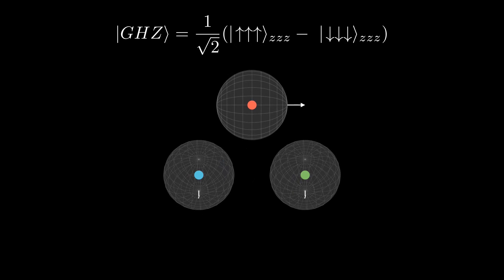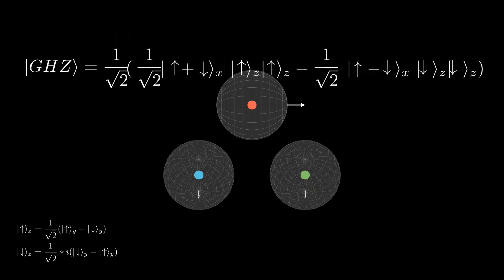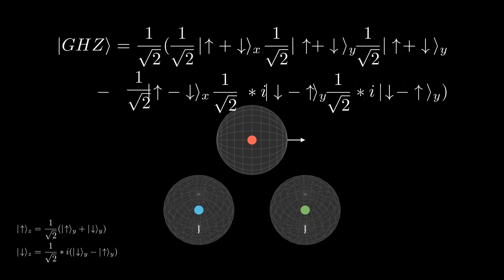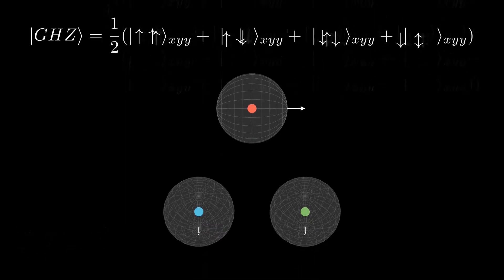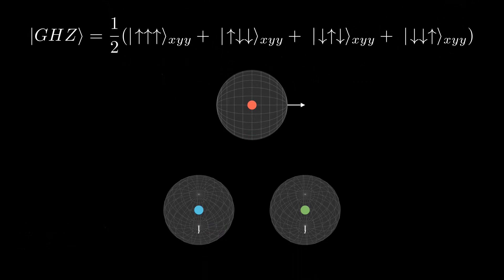So same as before, we know how to write the Zs in terms of the Ys. So we plug in, multiply out, cancel and combine like terms, and now what we can see is that this is the opposite of the XXX orientation,